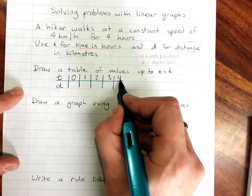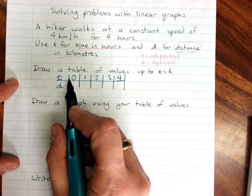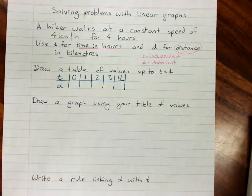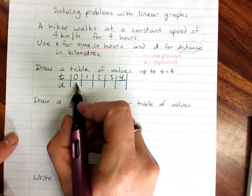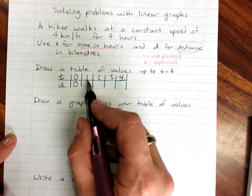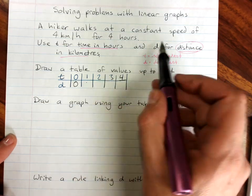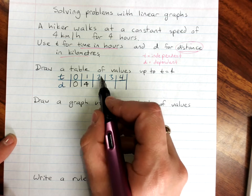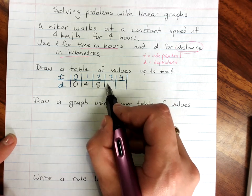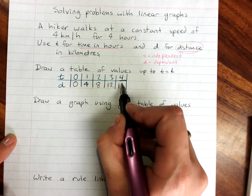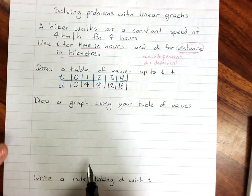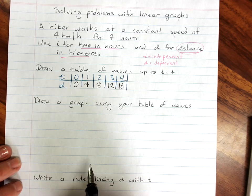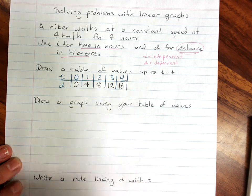So the table of values is going to say, what distance would I walk if I walked for 0 hours? Well, that one's easy. That's 0. How far would I have walked if I walked for 1 hour? I'm doing 4 kilometers an hour, so that will be 4. 2 hours, I'd do 8 kilometers. 3 hours would be 12. And at 4 hours, I would have walked 16 kilometers. Sorry about the extra background noise there.